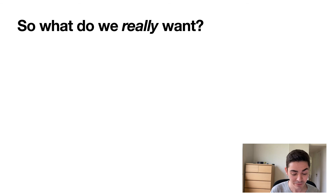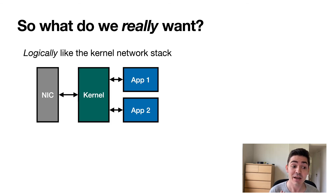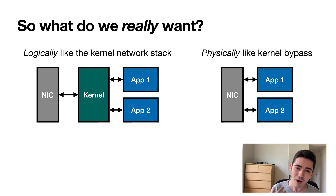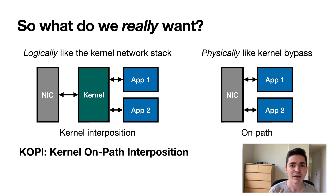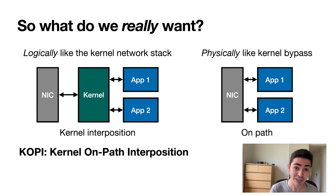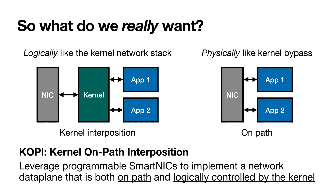So what do we really want? We want something that is logically like the kernel network stack, while also being physically like kernel bypass. We want to have kernel interposition without reintroducing data movement overheads — something that is on path. Our proposal is a new OS architecture that we call COPI, which stands for Kernel On-Path Interposition. The idea is quite simple: we leverage programmable smart NICs to implement a network data plane that is both on path while also being logically controlled by the kernel.